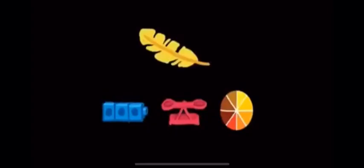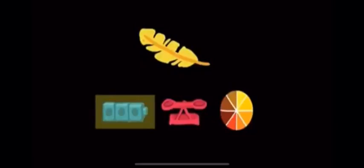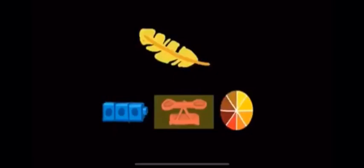Let's look at a few objects and identify which attributes can be measured. Here's a feather — which attributes of this feather can be measured? We can use the cubes to measure its length, and we can use the scale to measure its weight. We cannot use the color wheel to measure its color.